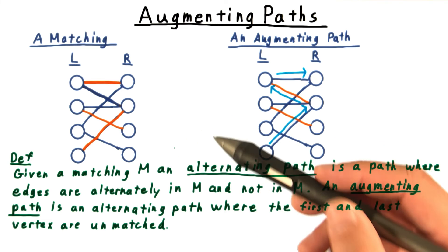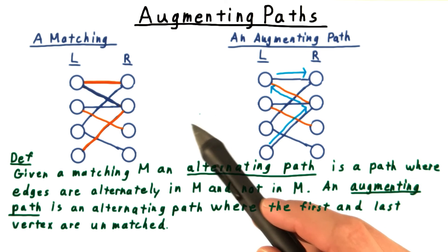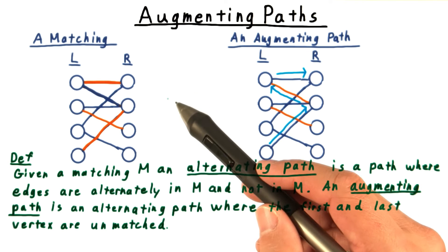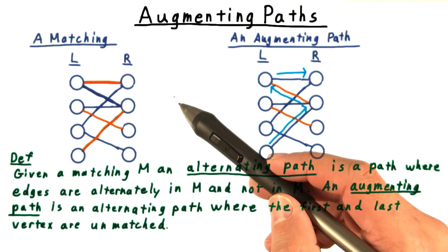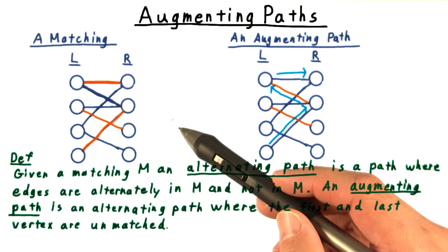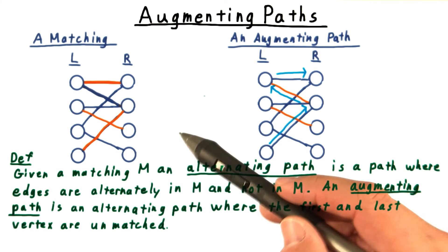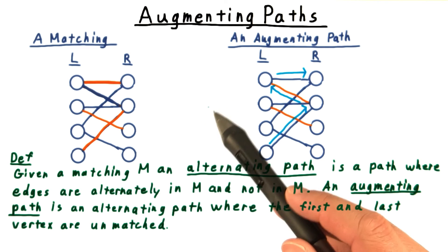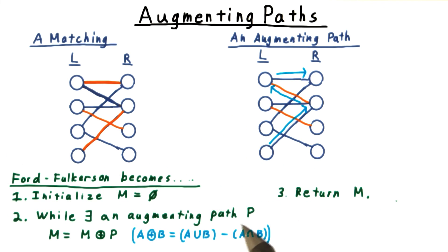This always increases the size of the matching, because before we flipped, there was one more unmatched edge than matched edge in the path. So when we reverse the matched and unmatched edges, we increase the size of the matching by one. In fact, we can restate the Ford-Fulkerson method purely in these terms.